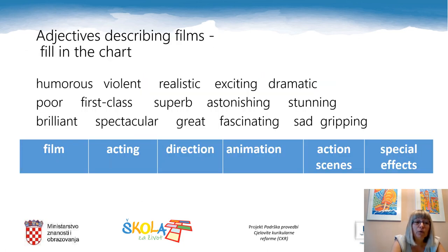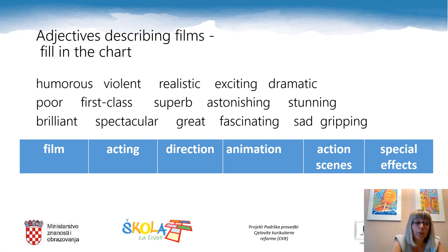We have come to the fourth part of our mind map — adjectives describing films. Let's have a look and see what to do with this chart and the given adjectives. This chart consists of six columns: film, acting, direction, animation, action scenes and special effects.